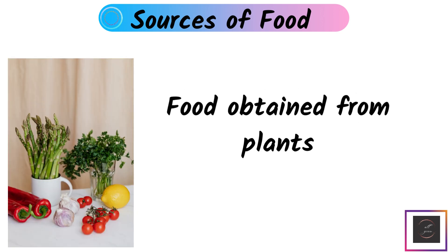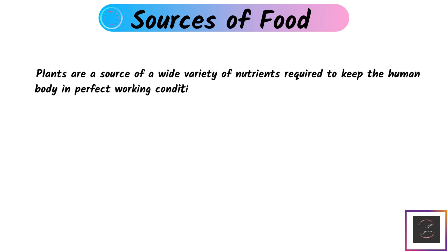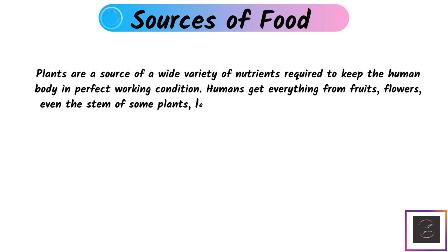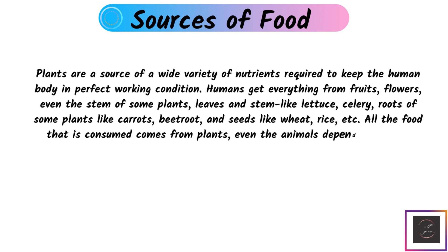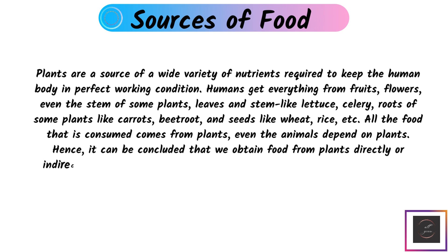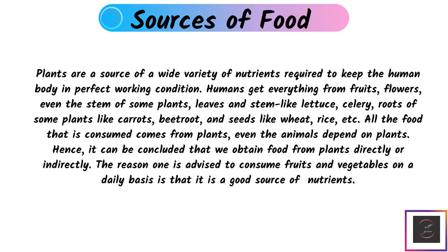Food obtained from plants: Plants are a source of a wide variety of nutrients required to keep the human body in perfect condition. Humans get everything from fruits, flowers, even the stems of some plants, leaves, roots of some plants like carrot, and seeds like wheat and rice. We obtain food from plants directly or indirectly, which is why one is advised to consume fruits and vegetables on a daily basis, as they are a good source of nutrients.